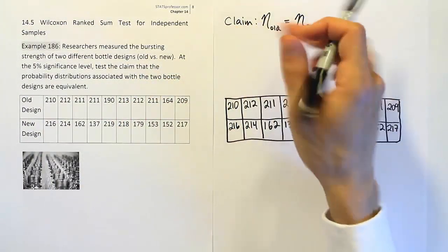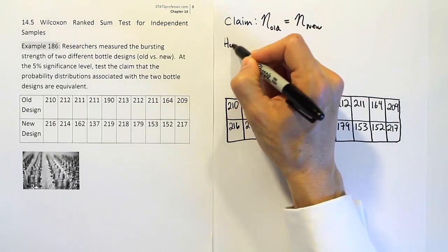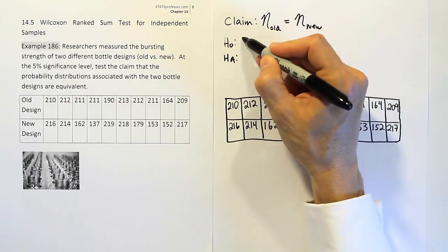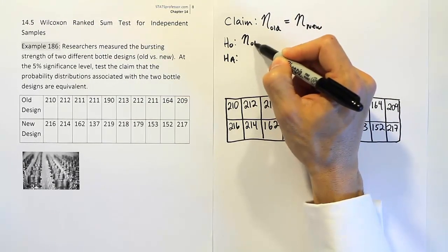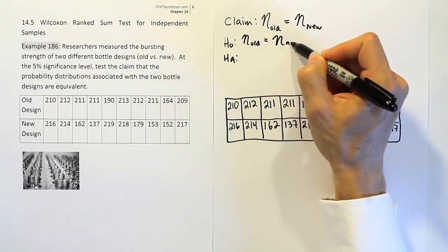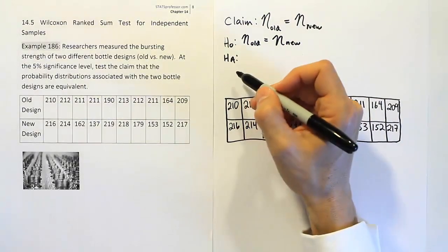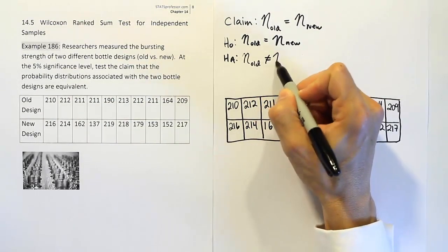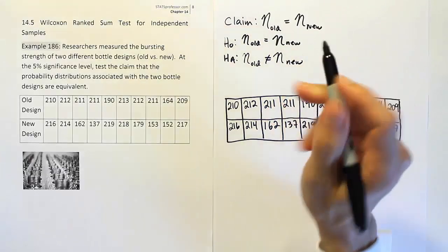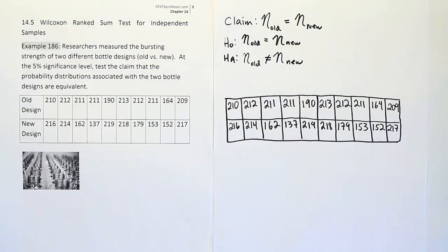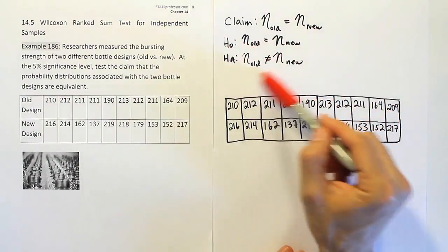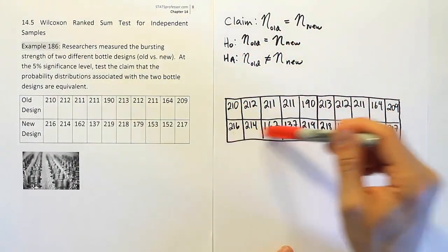That's a more narrow claim, and it's okay to use. H0 matches the claim because the claim has an equal-to sign, so H0: median of old = median of new. For HA, we have the opposite — not equal to. Now the next step is to rank the data. Step one is the claim, step two is the hypotheses, and step three is where we rank the data.